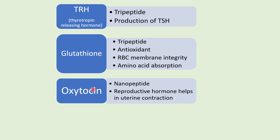Next is oxytocin, which is a nonapeptide — meaning it is made up of nine amino acids joined together by peptide bonds. Oxytocin is a reproductive hormone that helps in uterine contraction.